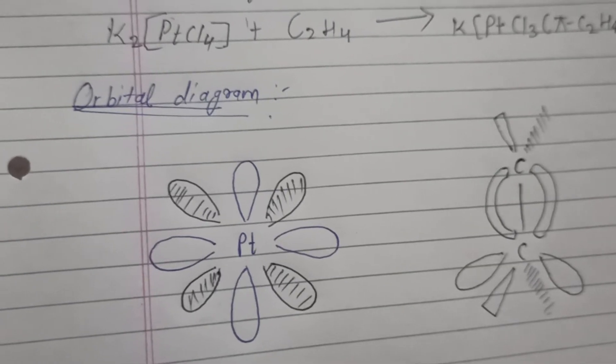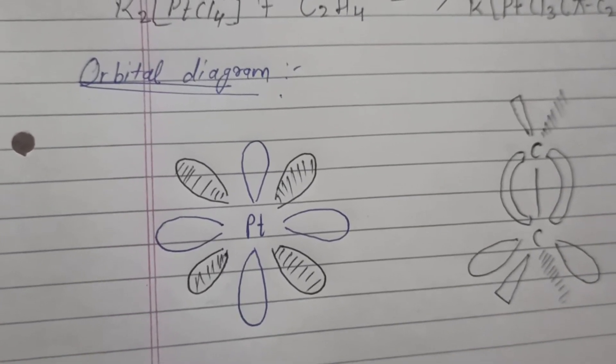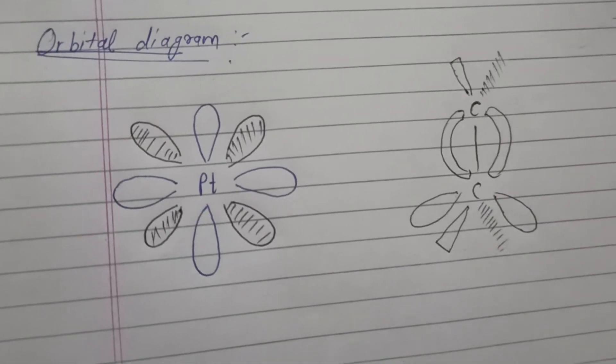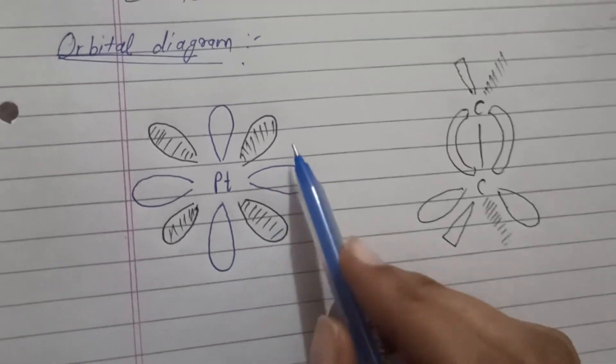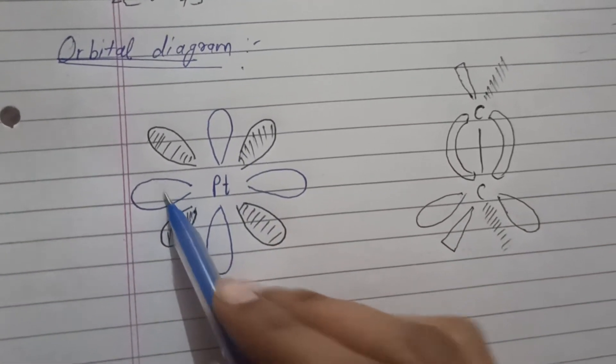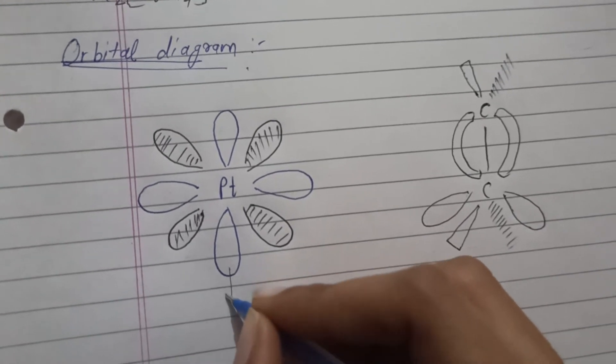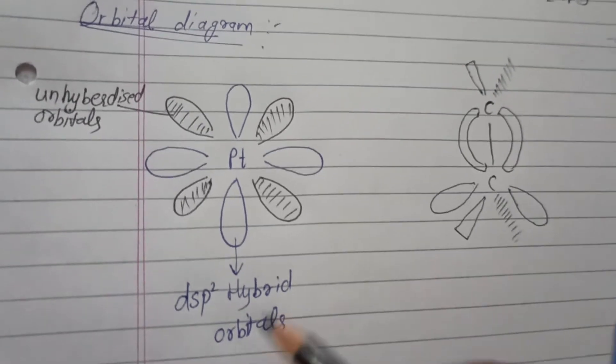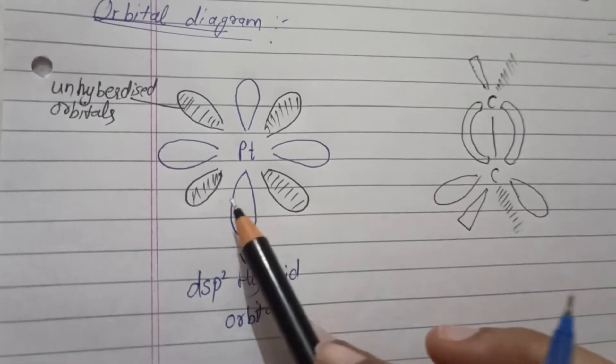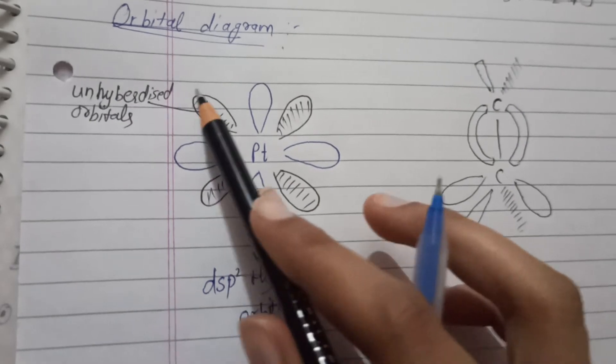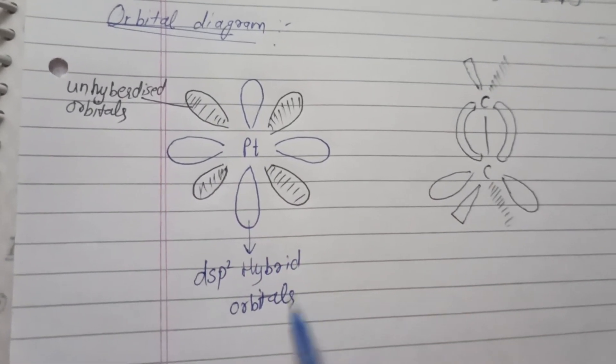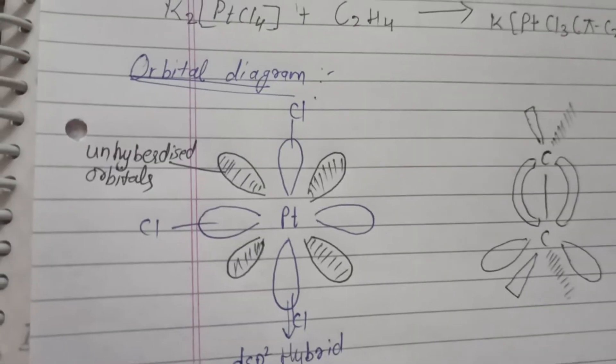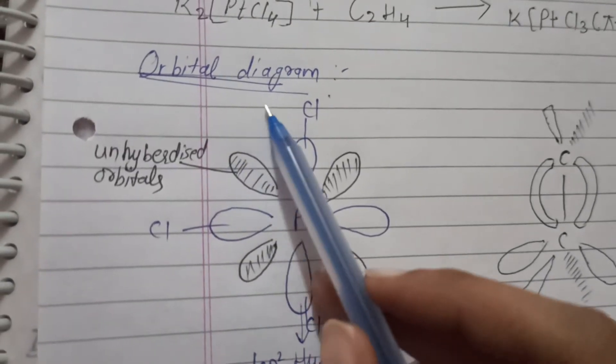Now the most important thing is the orbital diagram. You have to understand this very carefully. If you understand it, you will understand the whole concept. Now as you can see in blue, these are hybrid orbitals which are dsp2 hybrid orbitals. We have 4 from blue, and these are unhybridized orbitals.